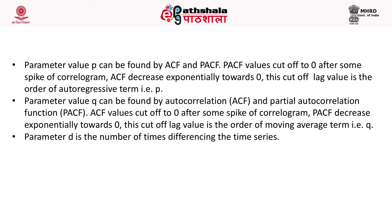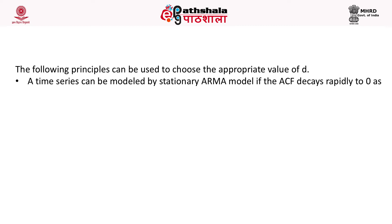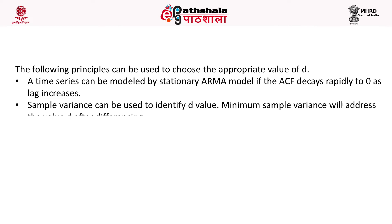Parameter Q can be found when ACF values cut off to 0 after some spike of the correlogram and PACF decreases exponentially toward 0; this cutoff lag value is the order of the moving average term Q. Parameter D is the number of times differencing is applied. A time series can be modeled by a stationary ARMA model if the ACF decays rapidly to 0 as lag increases. The minimum sample variance after differencing can also be used to identify the value of D.